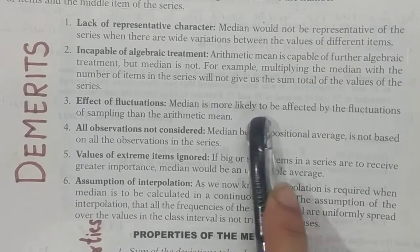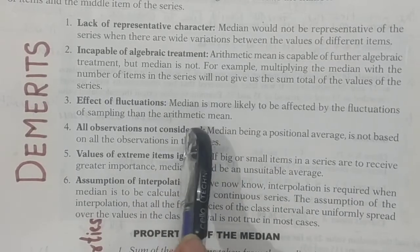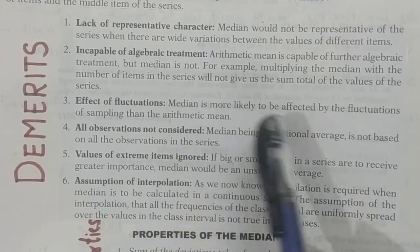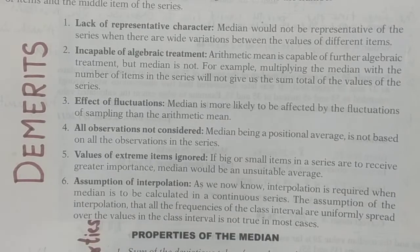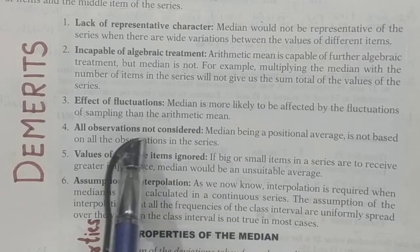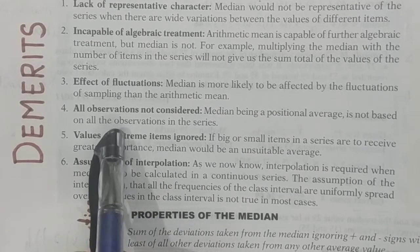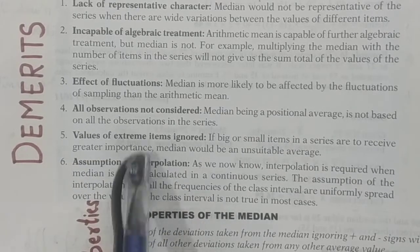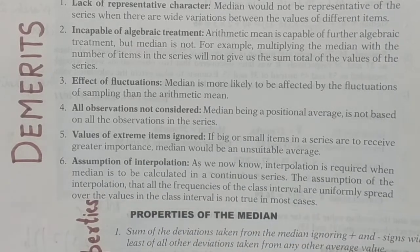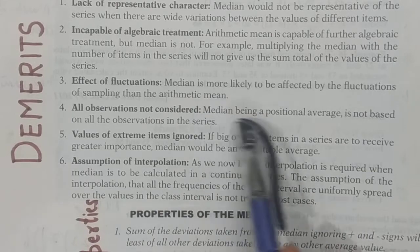Number three: effect of fluctuation. Median is more likely to be affected by fluctuations of sampling than the arithmetic mean. If you take a different sample, the central value can change easily. Also, in the case of the median, not all observations are considered because it is a positional average — it only focuses on the center position, and so extreme items are not accounted for.